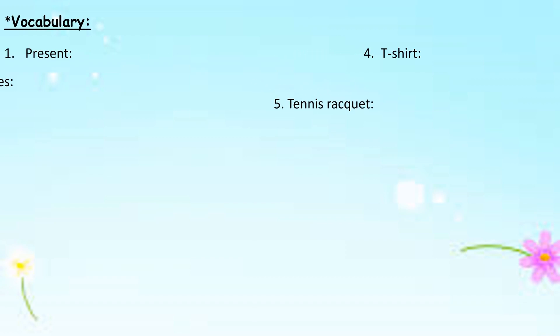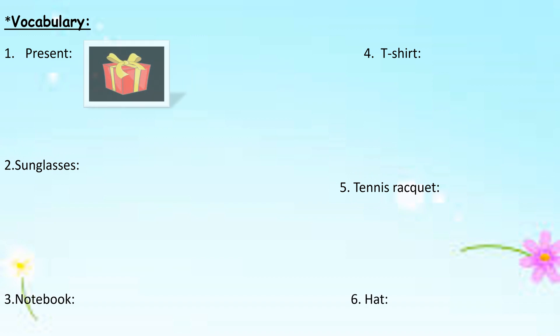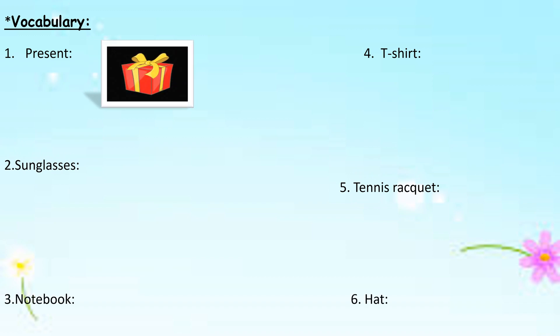Now we want to learn about the new vocabulary in this lesson. Let's start. The first word is 'present.' What's the meaning of a present? This is a present. Number two: 'sunglasses.' What's the meaning of sunglasses? Let's see — these are sunglasses.